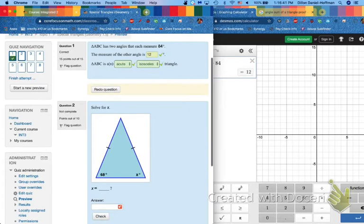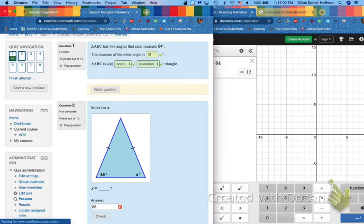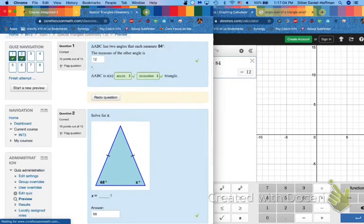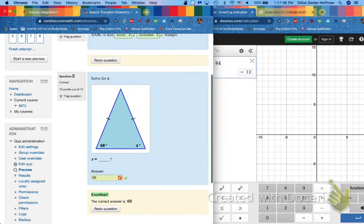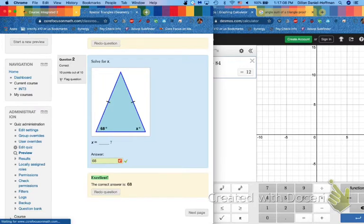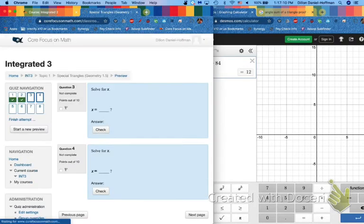The first thing to remember with number two is that these tick marks always mean that the sides match, and if the sides match, that means the angles match. So if this angle is 68, then the right angle over here is also 68. Number two is literally that simple - can you figure out what the markings mean on the triangles? Use that to solve for x. No computation for that one.